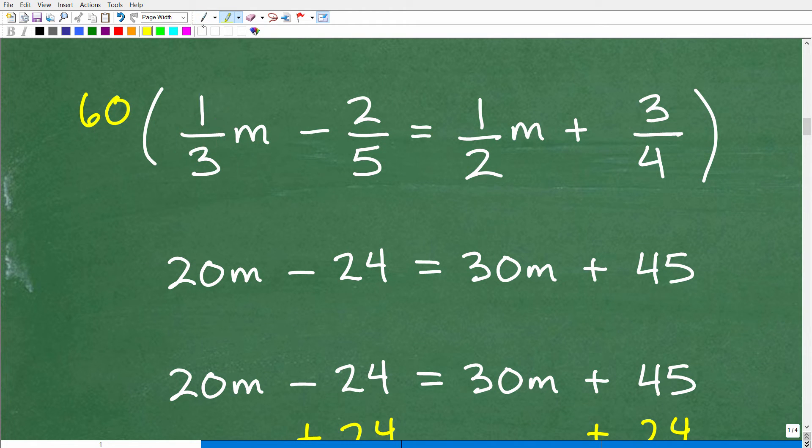All right. So, 60 times 1 third. It's basically the distributive property. We're going to multiply 60 times each of the terms in the equation. So, it's like the distributive property. So, we'll just take it one at a time. So, 60 times 1 third is what? Well, 3 goes into 60, 20. So, that's going to be 20 times 1 M or 20 M. So, if you're not quite sure, you can simply just go 60 times 1 third M and multiply those fractions out.